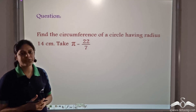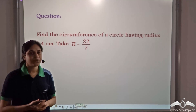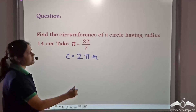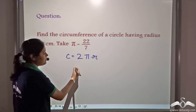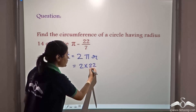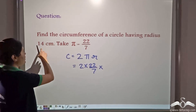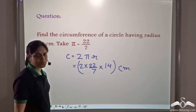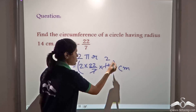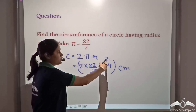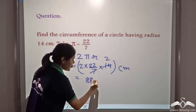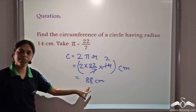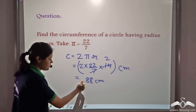Can you find the circumference of a circle having radius 14 centimeters? We know circumference equals 2πr. Taking the approximate value of pi as 22/7, we get: 2 × (22/7) × 14 = 2 × 22 × 2 = 4 × 22 = 88 centimeters. So the circumference of the circle having radius 14 centimeters is equal to 88 centimeters.